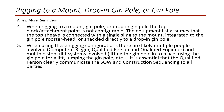When using these rigging configurations, there are likely multiple people involved: competent rigger, qualified person, and qualified engineer. And multiple steps or lifting systems involved — lifting the jimple into place, using the jimple for a lift, jumping the jimple, etc. It is essential that the qualified person clearly communicate the scope of work and construction sequencing to all parties.